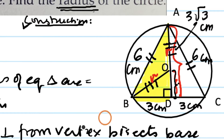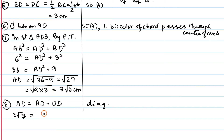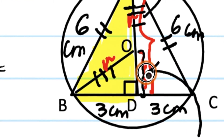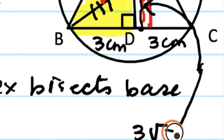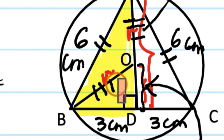We write: AD = AO + OD — from the diagram. Therefore 3√3 = r + OD, so OD = 3√3 − r.